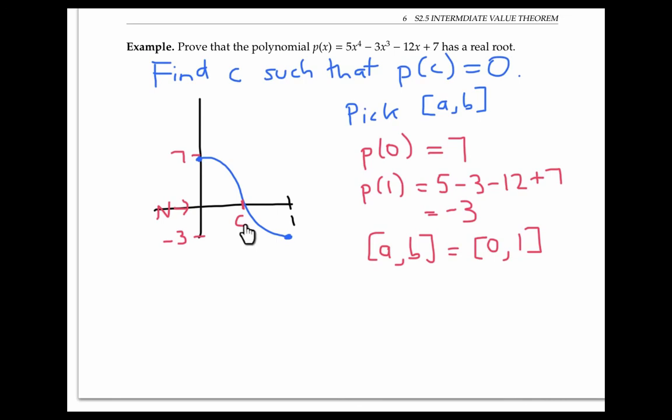And that number c, we don't know what it is, but we know it's somewhere in the interval zero to one. That value c gives us a real root for our polynomial. There may be other real roots, but we've proved there exists at least one.